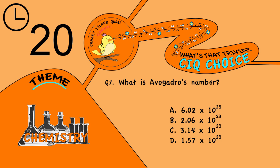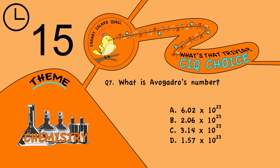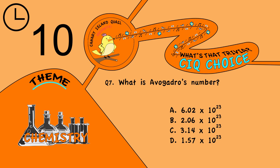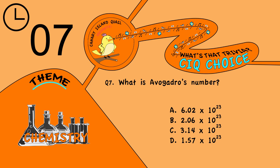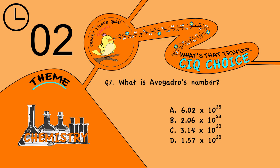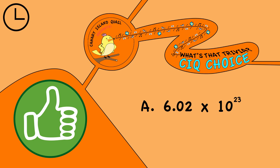Question 7. What is Avogadro's number? Is it A, 6.2 x 10 to the 23; B, 2.6 x 10 to the 23; or C, 3.14 x 10 to the 23? The answer is A, 6.2 x 10 to the 23.